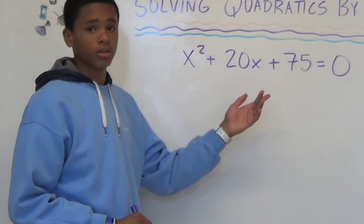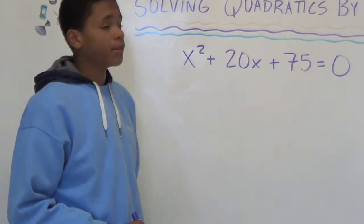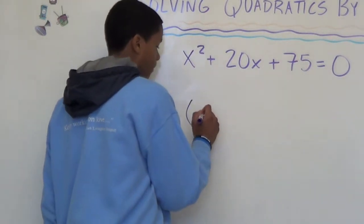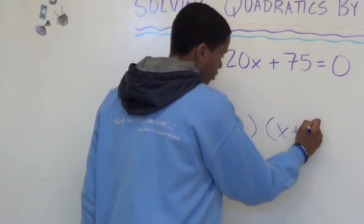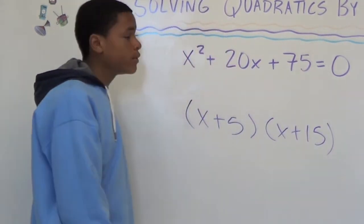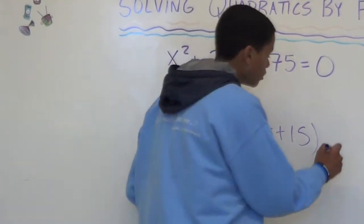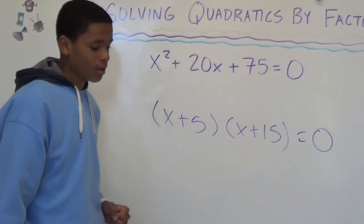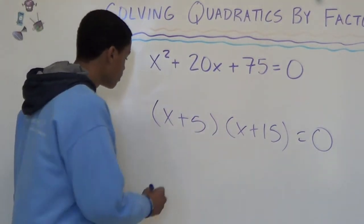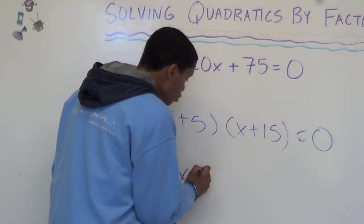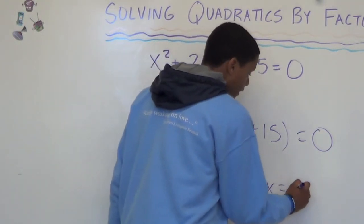I'm going to show you how to solve quadratics by factoring. You're going to find two numbers that add to 20, and if you multiply those same numbers, you get 75. If you add 15 and 5, you get 20, and if you multiply them, you get 75. The equation equals zero, so you want to get the opposite signs. X can equal negative 5, or it can equal negative 15.